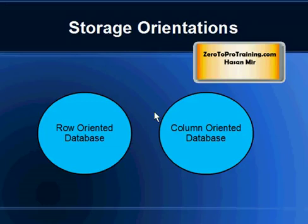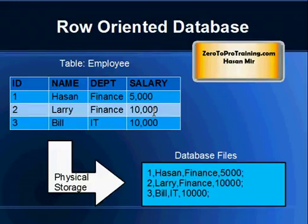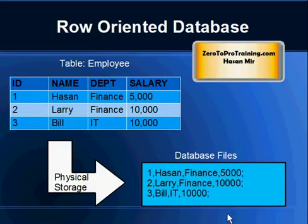Here's an example of how a row-oriented database stores information. Keep in mind that not necessarily one table goes in one file — Oracle, for example, stores multiple tables in one database file. But to give you an example: one record, say Hassan, Finance, 5000, goes as one row in the backend database file, with some kind of separator between values and a separator like a semicolon between records. In the actual file all records could go on one line.